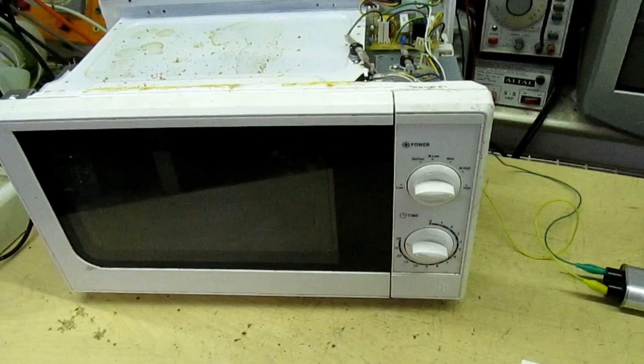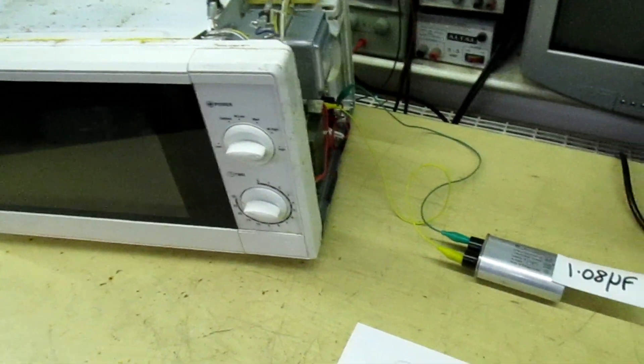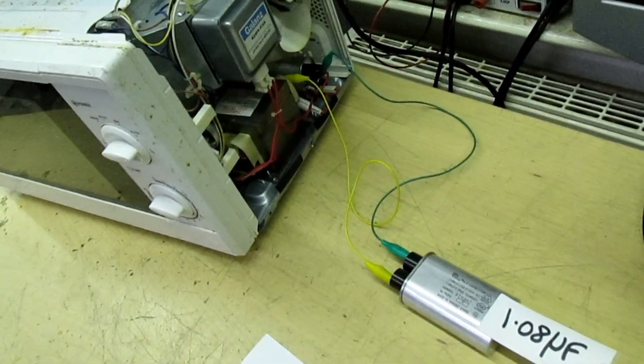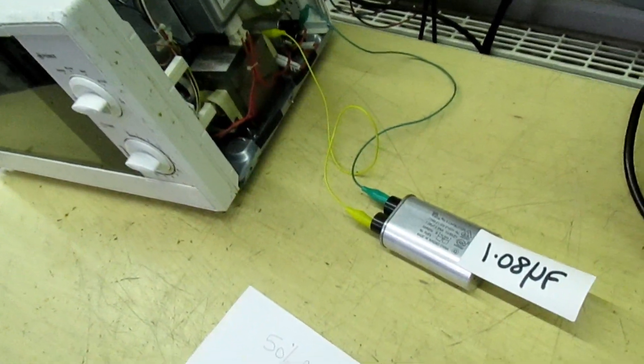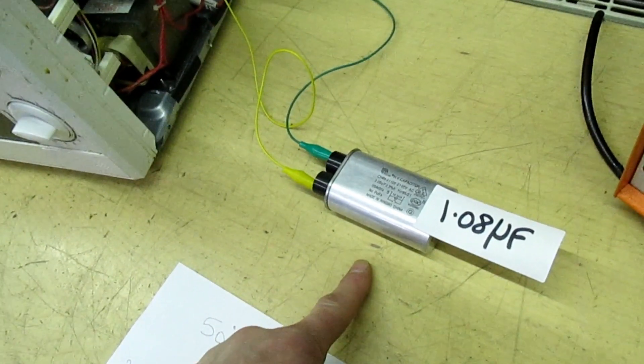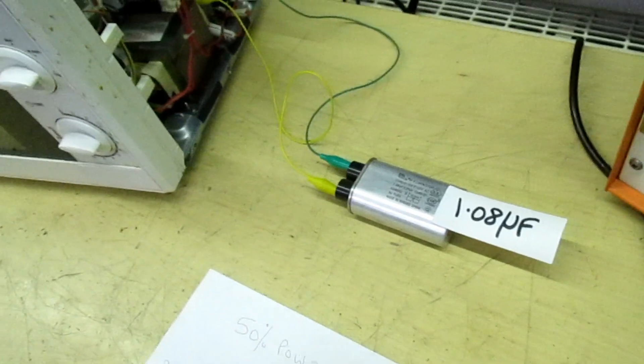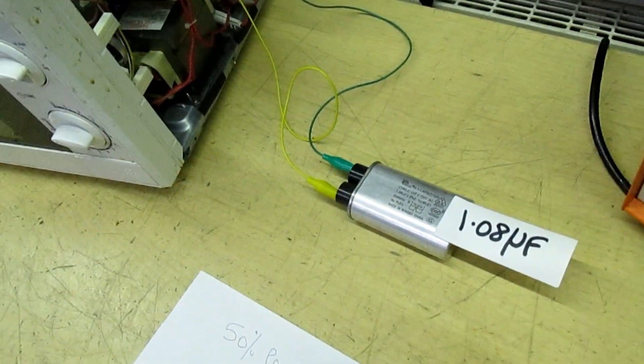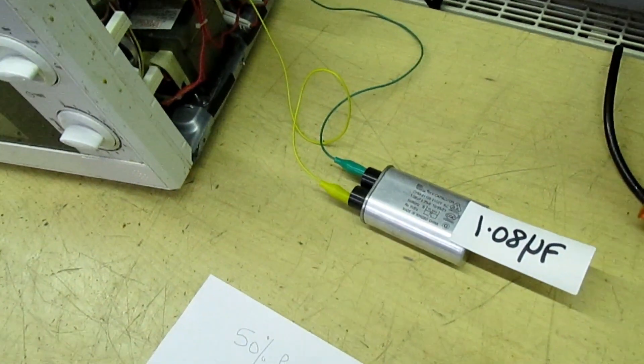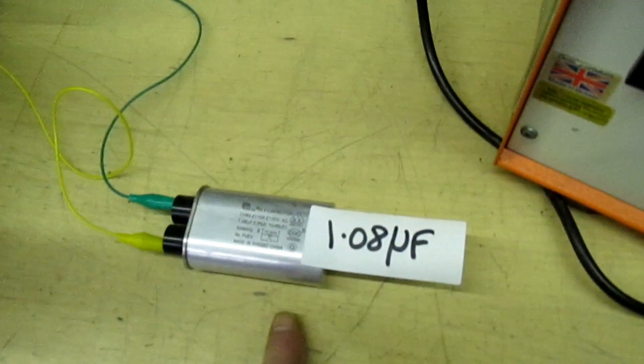So in this little domestic microwave, there's a common misconception on the internet that the actual capacitor in the microwave is for smoothing. Well, that's totally wrong. The high voltage capacitor actually forms a voltage doubler, and that gets the high voltage. It doubles the high voltage to the magnetron to enable the magnetron to operate.